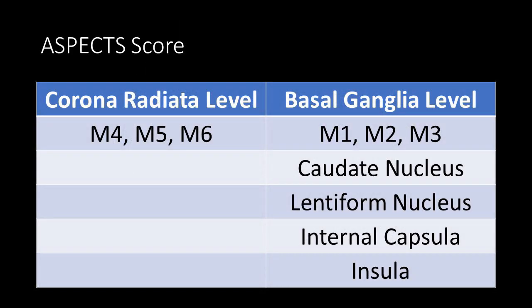If you are still confused, remember that each component of the ASPECTS score has one point. For each area that has an infarction, the value will be reduced by one point. In this patient, the territories that experienced infarction were M4, M5, and M6, with a total score of minus 3 points. Then infarctions in the M1, M2, and M3 territories had a total score of minus 3 points. Infarction in the lentiform nucleus had a score of minus 1 point, and infarction in the insula has a value of minus 1 point.